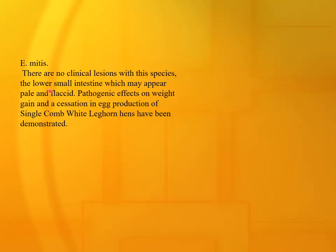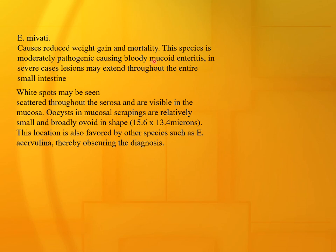Eimeria mitis: there are no clinical lesions with this species. The lower small intestine may appear pale and flaccid. Pathogenic effects on weight gain and egg production have been demonstrated. Eimeria mivati: causes reduced weight gain and mortality. This species is moderately pathogenic, causing bloody mucosal enteritis in severe cases. Lesions may be scattered throughout the entire small intestine. Whitish spots may be seen in the mucosa. Oocysts in mucosal scrapings are relatively small and broadly ovoid in shape. This location is also favored by other species such as Eimeria acervulina, obscuring diagnosis.